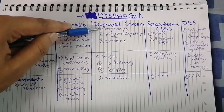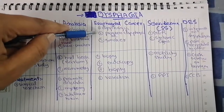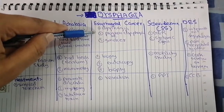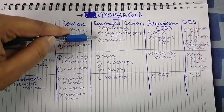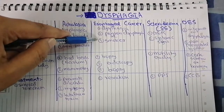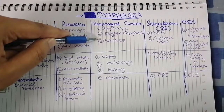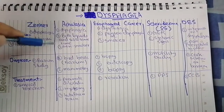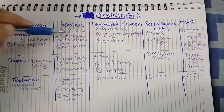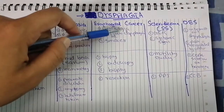Moving forward to esophageal cancer: in addition to dysphagia, the dysphagia is progressive — first it is with solids, and then gradually it becomes for liquids too. More than 70 to 80 percent of the time, esophageal cancer is associated with a person who is a smoker, whereas in achalasia it is a non-smoker. The dysphagia in cancer is progressive, whereas in achalasia it is simultaneous.